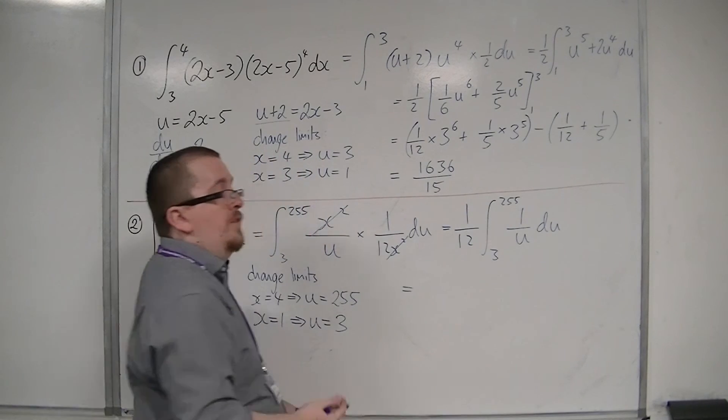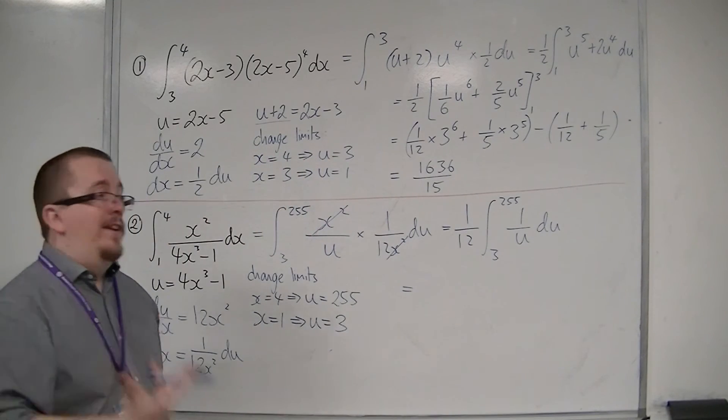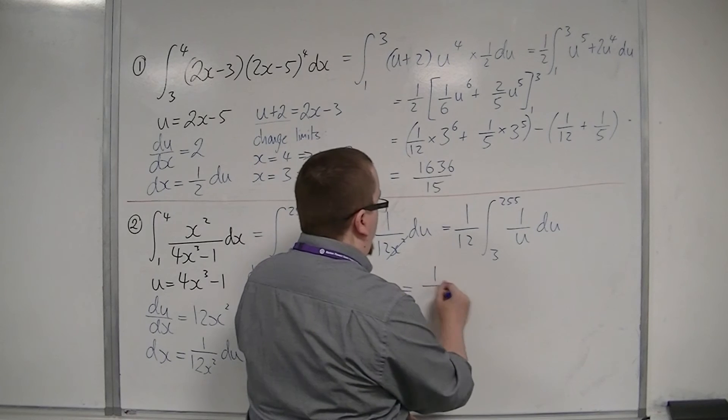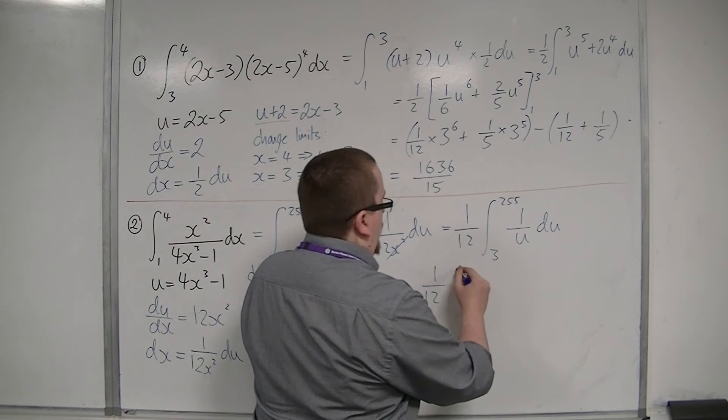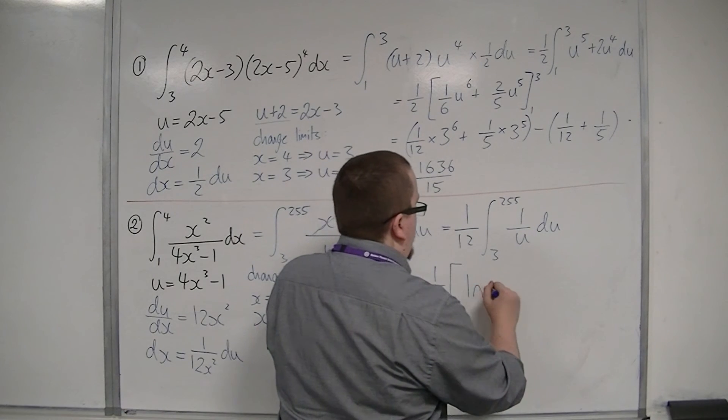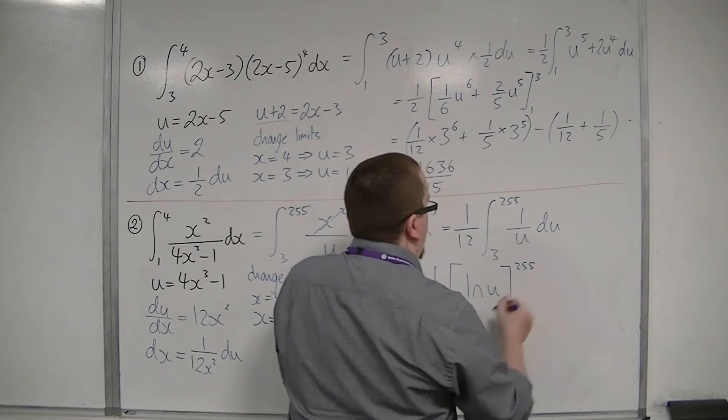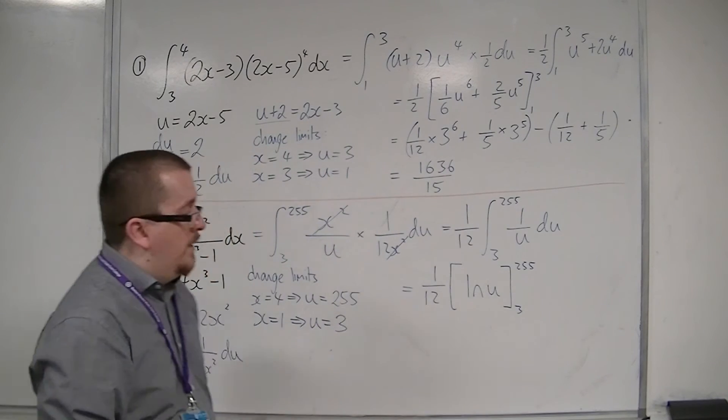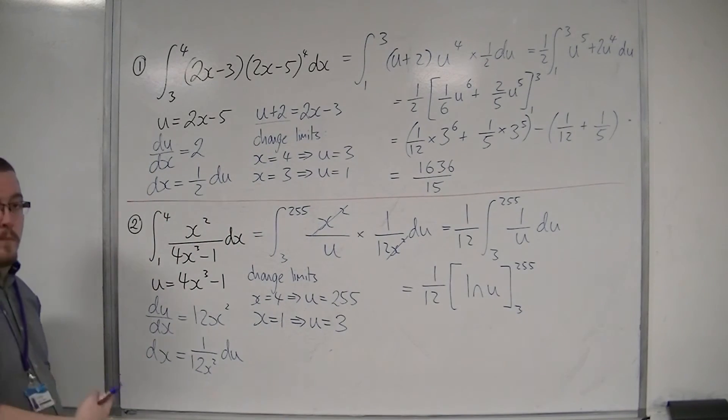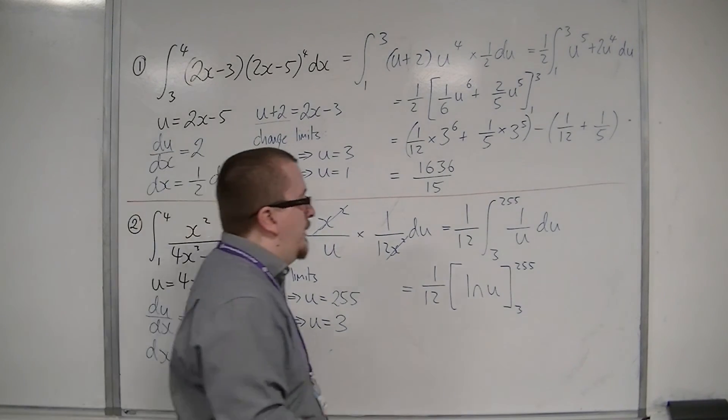Now we know that 1 over u integrates to log u. So this is 1 twelfth of log u, evaluated between 3 and 255. Now essentially, you should have modulus around the u, but because I'm substituting in positive numbers, it's not going to make any difference.